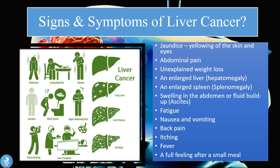Other symptoms include unexpected weight loss, an enlarged liver which is called hepatomegaly, an enlarged spleen which is called splenomegaly, swelling in the abdomen or fluid build-up which is called ascites. The patient may also experience fatigue, nausea and vomiting, back pain, itching, fever, and a full feeling after a small meal.